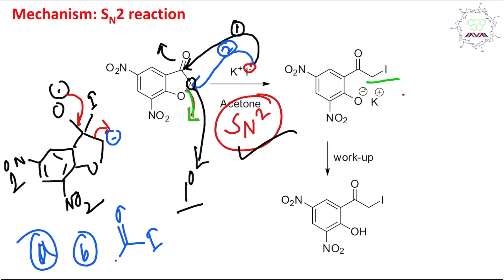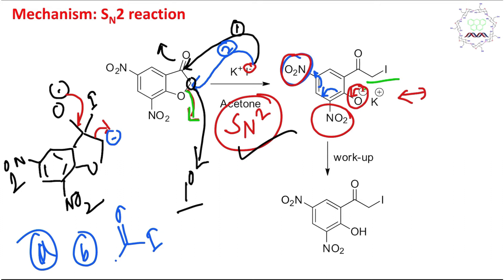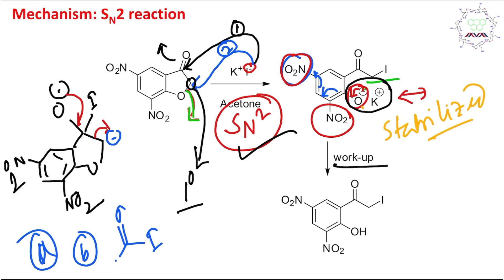How is the O⁻ stabilized? One nitro group can stabilize it by resonance, and a second nitro group can also delocalize the negative charge — so there are two nitro groups stabilizing this extra negative charge on the oxygen atom. That negative charge is stabilized, which is the driving force of the reaction. After workup, the phenoxide derivative gives an alpha-iodo alcohol product with the nitro groups remaining. This is the product.